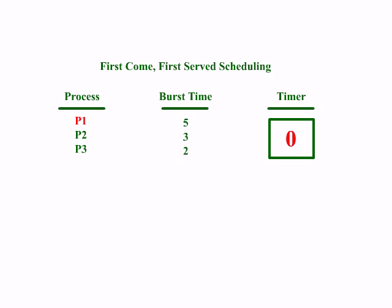We will be learning about the algorithms which are used in the operating system for execution of processes. We all know our systems are capable of doing many tasks together — you can watch YouTube videos, type a Word document, write a text document, and do many things together. So the operating system needs to decide which work should be done first and which work should be done afterwards. For that, we have different algorithms for determining which process to be executed first and which is to be executed next.